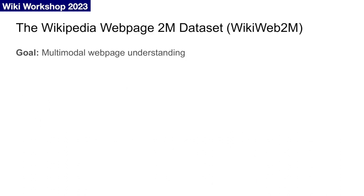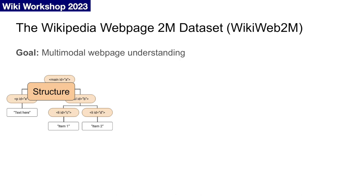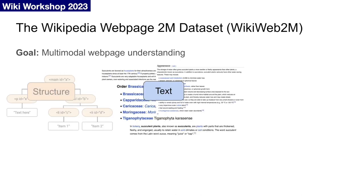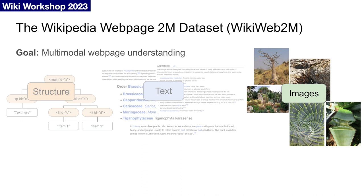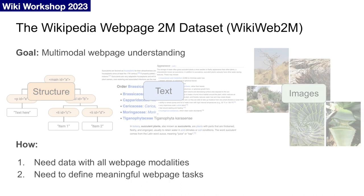We are interested in studying webpage understanding, which involves many rich modalities like structure from HTML and the document object model, text data from lists, section titles, and paragraphs, and images which provide additional information and context for web content. In order to study multimodal webpage understanding, we first need a dataset that provides all of these webpage modalities in one place, and we also need to define downstream tasks that can serve as a webpage benchmark suite.